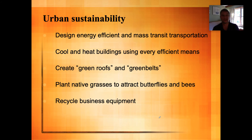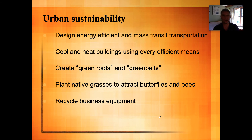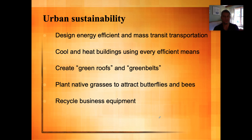In urban areas, we can design energy-efficient mass transit systems like subways that carry large numbers of people without using a great deal of energy. We can heat and cool buildings using efficient means, and create green roofs — planting a garden on the rooftop of an apartment building in a big city. We can use and preserve parklands as cities are being developed, plant native plants including grasses that attract butterflies, bees, and other pollinators, and recycle business equipment like old computers and cell phones, whose minerals — silver, gold, copper — can be recovered instead of mining deeper into the ground.